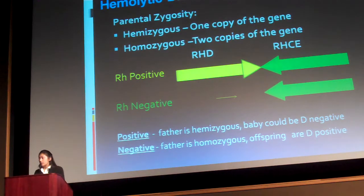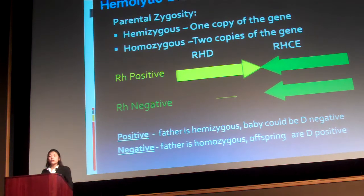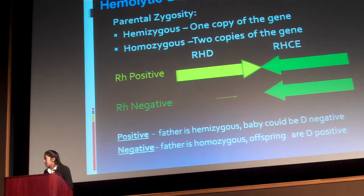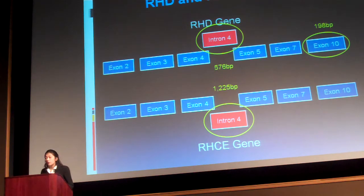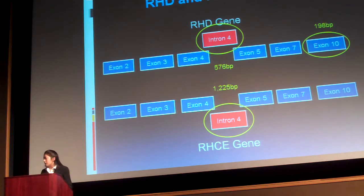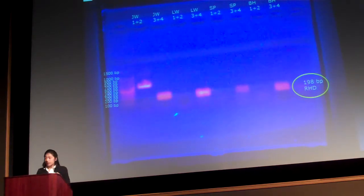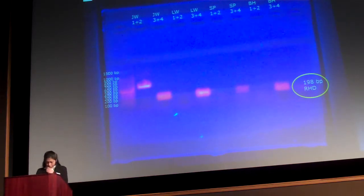Now I'll discuss finding the D antigen. The D antigen codes for the Rh factor — the plus or minus in blood type. There are two main genes that code for the Rh factor: RhD and RhCE. If you are Rh positive, you have both RhD and RhCE. If you are Rh negative, you only have the RhCE gene. By looking for the presence or absence of the RhD gene, we can determine if someone is Rh positive or negative. In my experiment, I looked at a 576 base pair segment from intron 4 and a 198 base pair segment from exon 7 of the RhD gene, using a 1225 base pair segment on intron 4 of the RhCE gene as a control. In the final gel, the presence of the 198 base pair RhD band means the gene was present and the person's RhD genotype is positive.